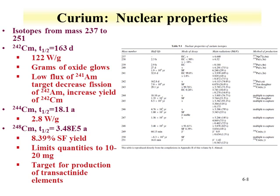We'll now turn our attention to curium. Curium has a number of isotopes from 237 to 251. Important curium isotopes for chemistry include curium-242, which is relatively short-lived at about half a year and has a high degree of heat per unit mass. Curium-244 is more widely available with a longer half-life of 18 years, though its heat per unit mass is much less than the 242. The longer-lived isotope curium-248, with a half-life of 3×10⁵ years, is limited in quantity — on the order of 10 to 20 milligrams — and is often used for target production for the formation of transuranic elements.